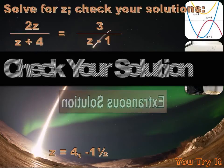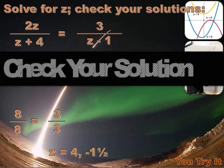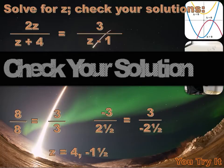Let's check our solutions. Putting 4 in for z, we get 8 over 8 equals 3 over 3, which means 1 equals 1 — that's true. Now let's try minus 1 and a half: we get minus 3 over 2 and a half equals 3 over minus 2 and a half, and those are equal. Both solutions check out.